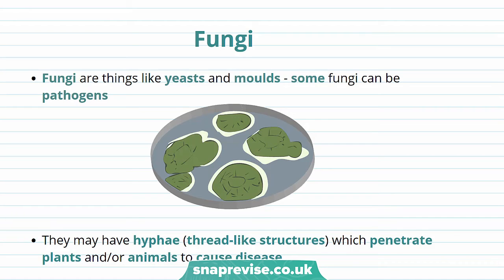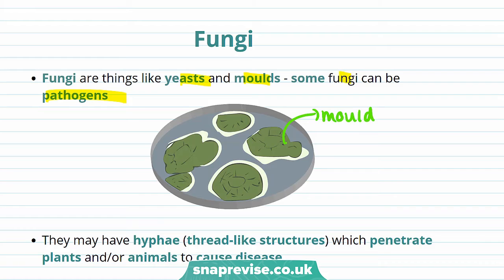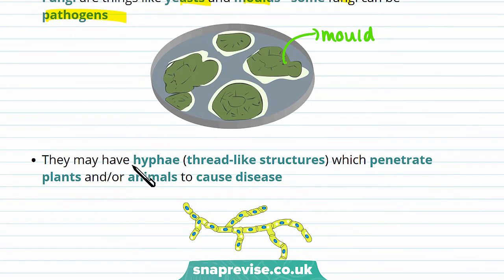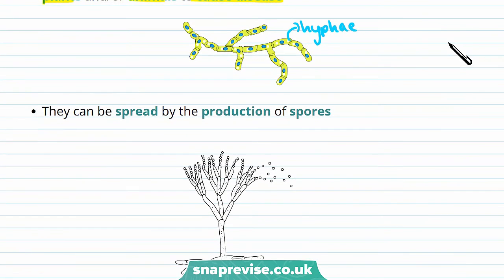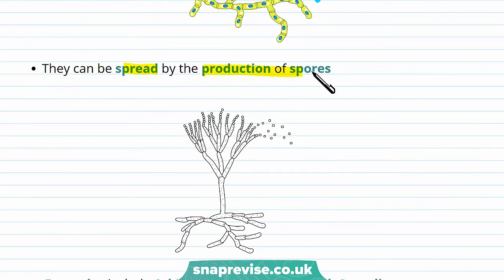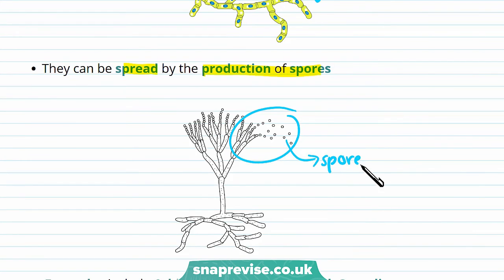Fungi are other organisms that cause disease. They're things like yeast and moulds. Some fungi can be pathogens. Some fungi are single-celled. They may have a hyphae, which is a thread-like structure which penetrates plants and or animals to cause disease. This is hyphae, and it can penetrate the skin of humans or the surface of plants. Hyphae can be spread by the production of spores, which spread to plants or animals.